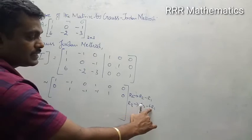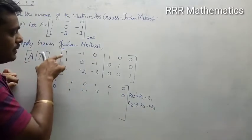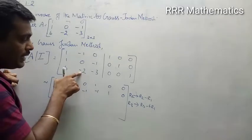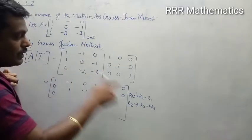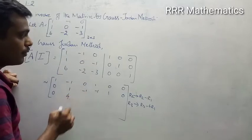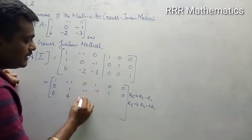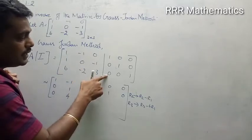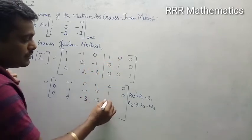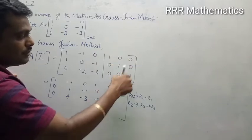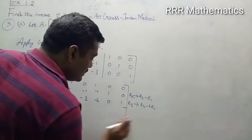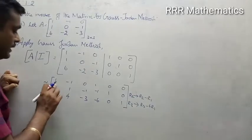Next, R3 minus 6 times R1. So just multiply: 6 minus 6 = 0; then -2, when you multiply -1 by 6 it becomes +6, so -2 + 6 = 4; this is -3 and 6 times 0 = 0 so -3. For the identity part: 0 minus 6 = -6; 0 minus 0 = 0; 1 minus 0 = 1. So now I got zeros here and here.